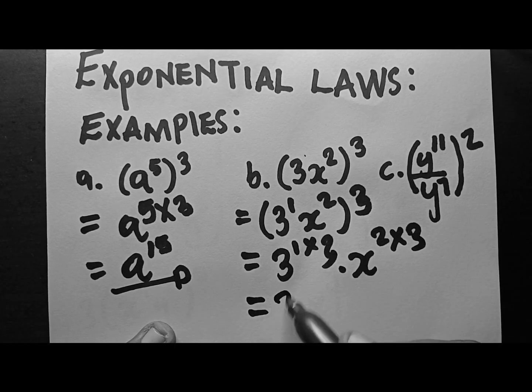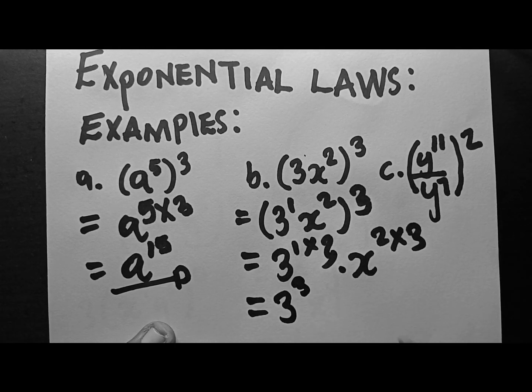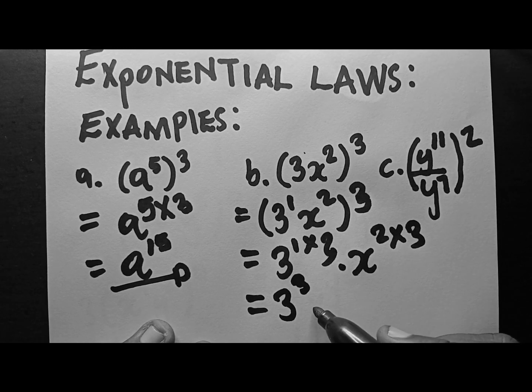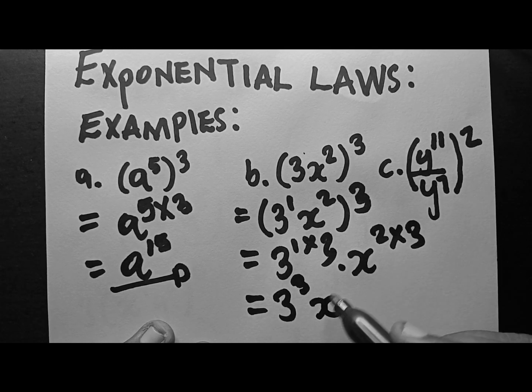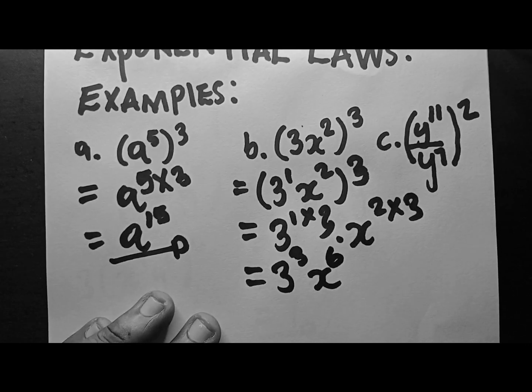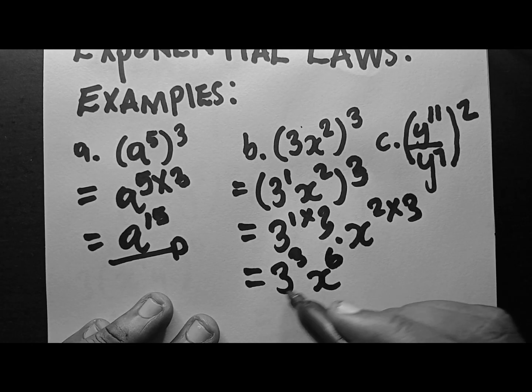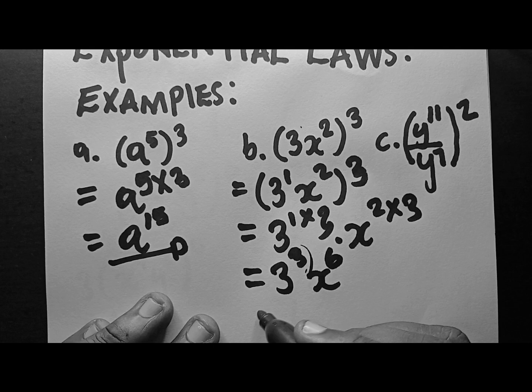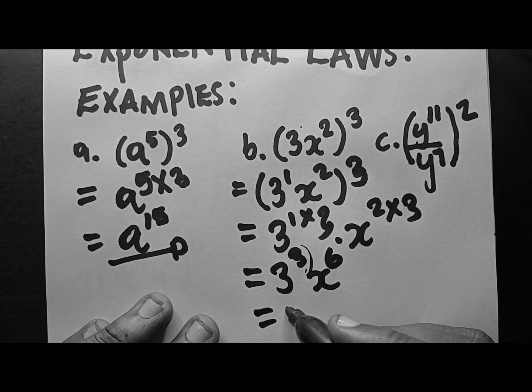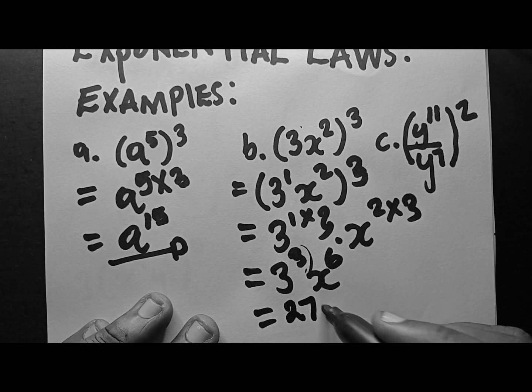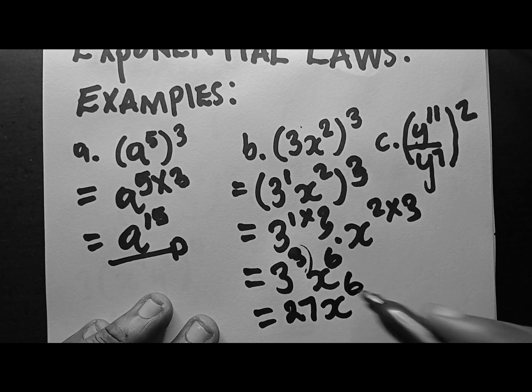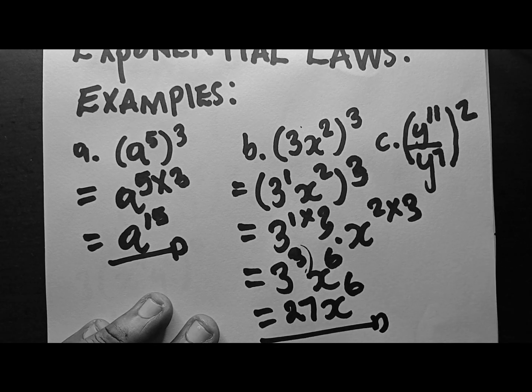So this is 3 to the power of 3, and this is x to the power of 6. But we know the value here. 3 to the power of 3, we all know that is 27x to the power of 6. So this is your final one.